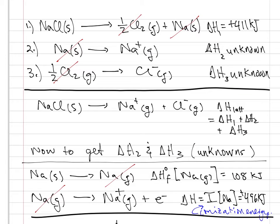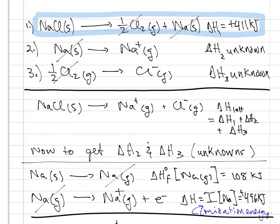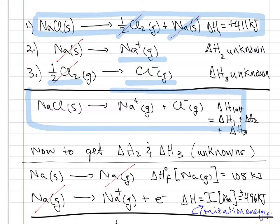Reversing the delta H of formation of sodium chloride, we can see that we'll need to eliminate sodium from our equation to provide gaseous sodium ions. In addition, we'll need to eliminate chlorine gas from our equation and provide gaseous chloride ions. This will give us our desired overall equation, which will be the sum of these equations, but for equations 2 and 3 delta H is unknown.